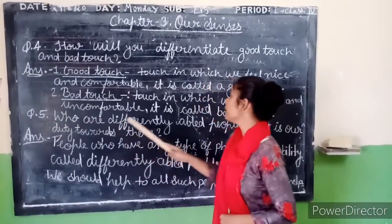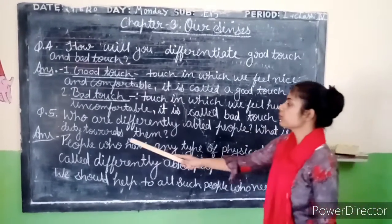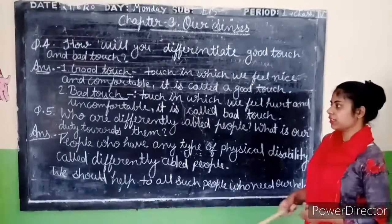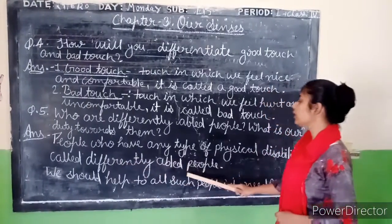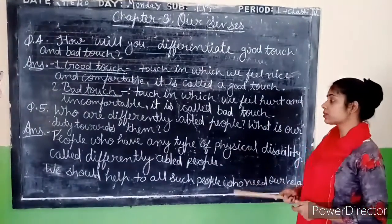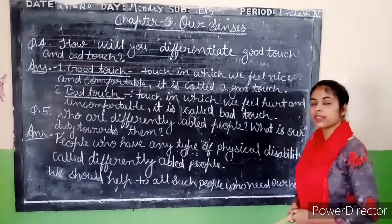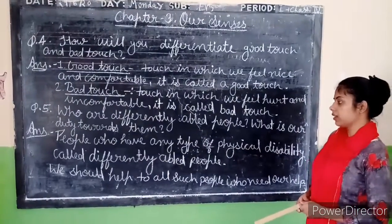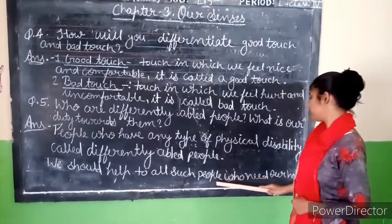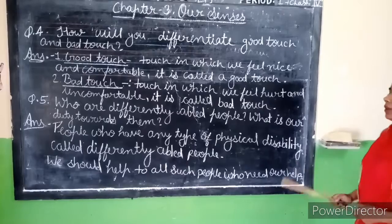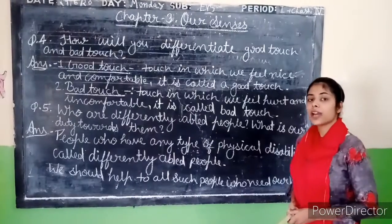Question number 5: Who are differently-abled people? People who have every type of physical disability are called differently-abled people. These people with physical disability can't listen, or can't see, or have some other physical limitation. We should help all such people who need a helping hand.